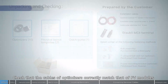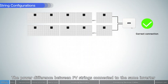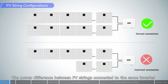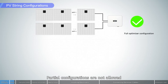Check that the cables of optimizers correctly match those of PV modules. The power difference between PV strings connected to the same inverter must be less than or equal to 2 kilowatts. Otherwise, the inverter may be derated. Partial configurations are not allowed.